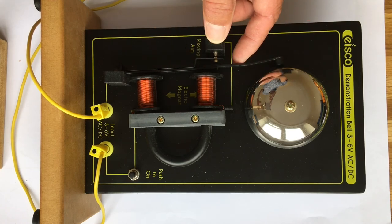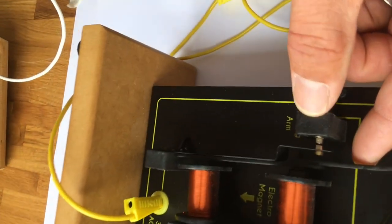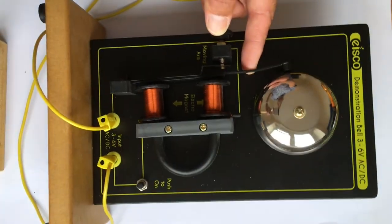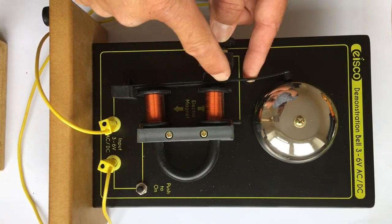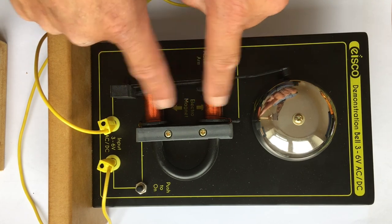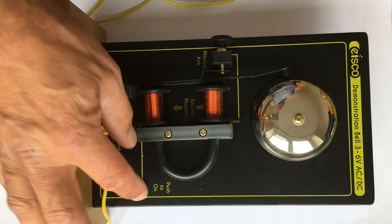And notice now the contacts are now open. So if you ever look carefully that contact there opens, and when that contact opens the current then stops. The current will stop and then this will spring back and of course it will make the electromagnet again and it'll go backwards and forwards.